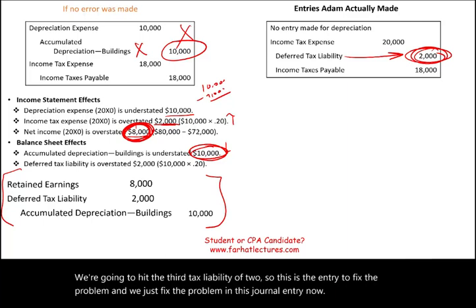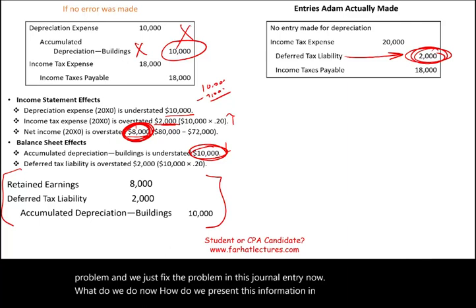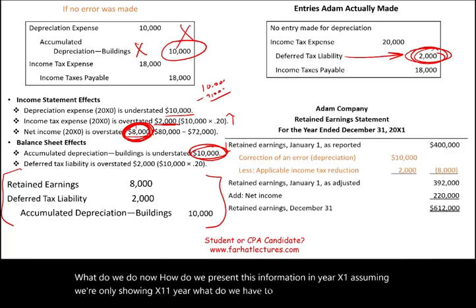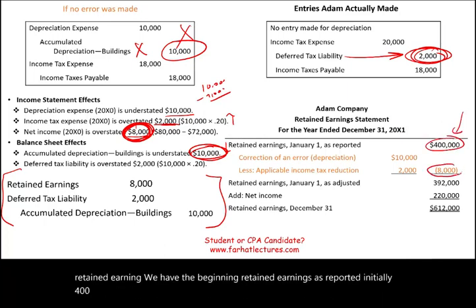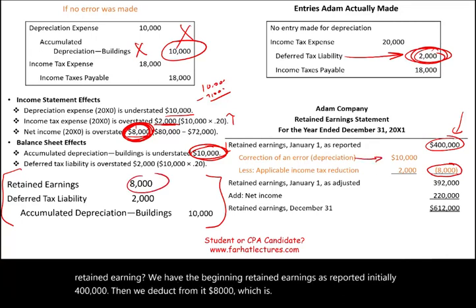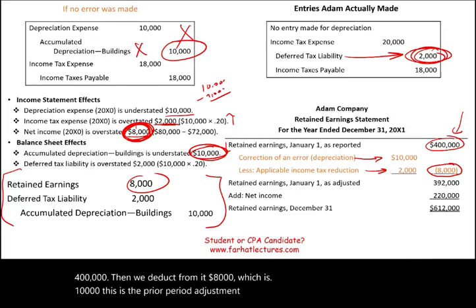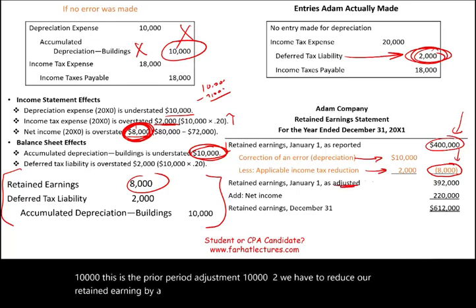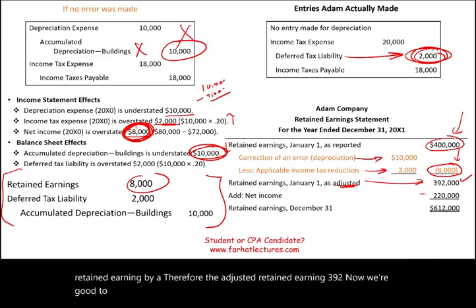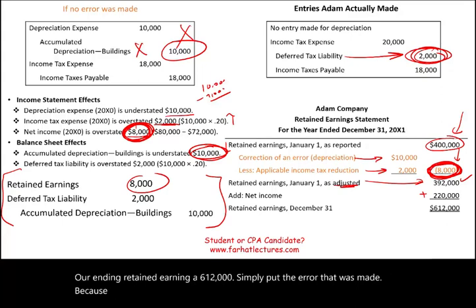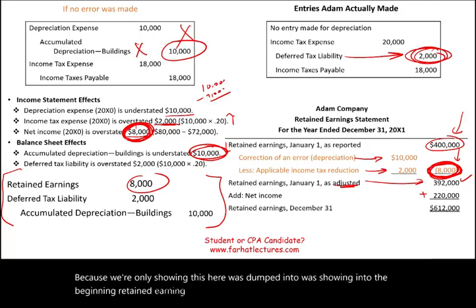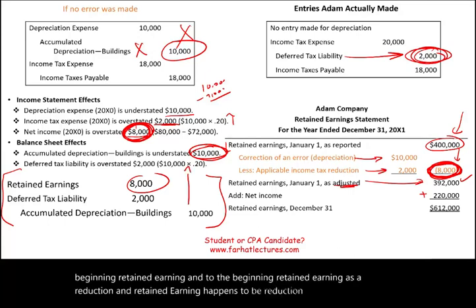For presentation in year X1, assuming only one year is shown, the statement of retained earnings shows: beginning retained earnings as originally reported, $400,000; less prior period adjustment of $8,000 ($10,000 minus $2,000 tax effect); adjusted beginning retained earnings, $392,000; plus net income for the year, $220,000; less dividends, $0; ending retained earnings, $612,000. The error is thus dumped into beginning retained earnings as a reduction. Sometimes an error could increase retained earnings — it depends on the nature of the error.